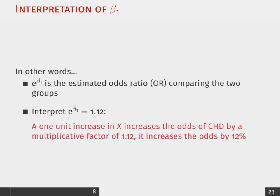So, anything above 1, if it was like 1.05, that would be an increase in 5% of the odds of having CHD, given a one unit increase in age in this instance.